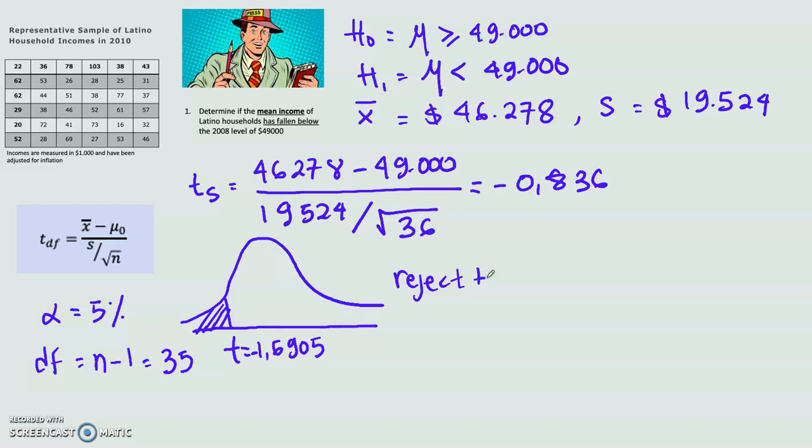reject H null if t-statistic is smaller than negative t-critical, which is minus 1.6905. Since we have calculated the t-statistic is minus 0.836, 0.836 is larger than the t-critical, so it falls in this area. This is the t-statistic. It is greater than the negative t-critical, so our conclusion is we do not reject H null.